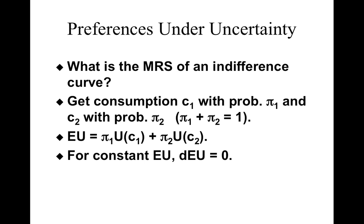We have already figured out the slope of the budget constraint. Let's figure out what is the slope of the indifference curve, where on the x-axis you have consumption when there is an accident, and on the y-axis there is consumption when there is no accident. The utility curves are drawn for a given level of expected utility, which is the weighted average of utilities of individual outcomes.